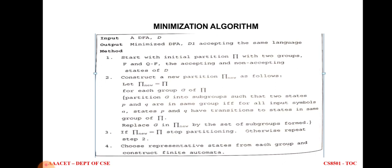In the second step, we construct a new partition π_new. Initially we set π_new equal to π. For each group of π, we partition the group into subgroups such that two states p and q are in the same subgroup if and only if, for all input symbols, states p and q transition to states in the same group of π. We then replace group G in π_new by the set of subgroups formed. In the third condition, if π_new equals the old partition π, we stop the partitioning method; otherwise we repeat the second step.